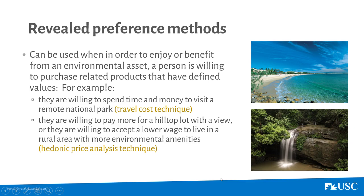A different method is hedonic pricing analysis, where we try to isolate some environmental attribute and determine how much people are willing to pay for it. For example, we would look at otherwise identical houses — some close to the beach, some close to Budrum Falls, or some with a view of the Glasshouse Mountains — and look at the difference in sales price when they have that attribute and when they don't. By doing that, we can see how much people are actually paying for those types of attributes and aggregate them up to estimate values.